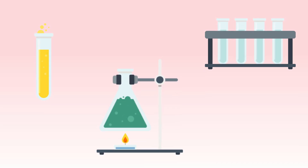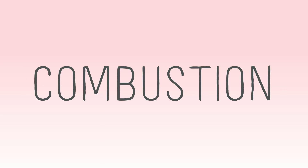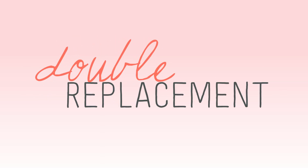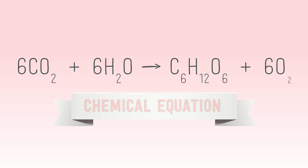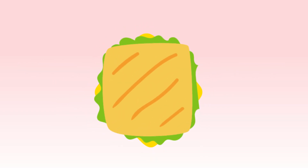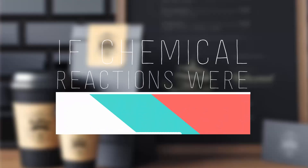In this class, we learn five different types of chemical reactions: synthesis, decomposition, combustion, single replacement, and double replacement. We usually use chemical equations to represent these, but you know what's better? Sandwiches. So now I present to you: if chemical reactions were sandwiches.